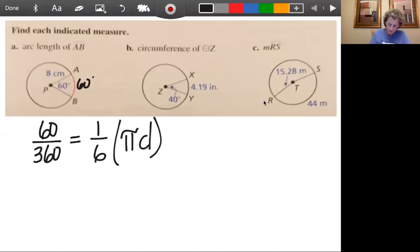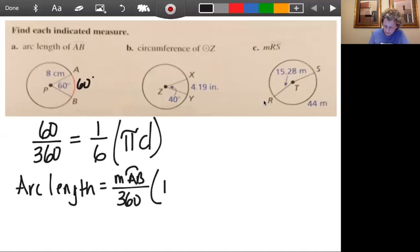And so to find arc length, we're going to take the portion out of 360 and multiply it by the circumference. So it's basically the measure of arc AB out of 360 times pi D, which is circumference.